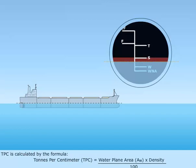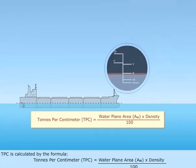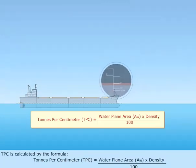TPC is calculated by the formula: Tons per centimeter TPC equals water plane area A sub W times density, divided by 100.